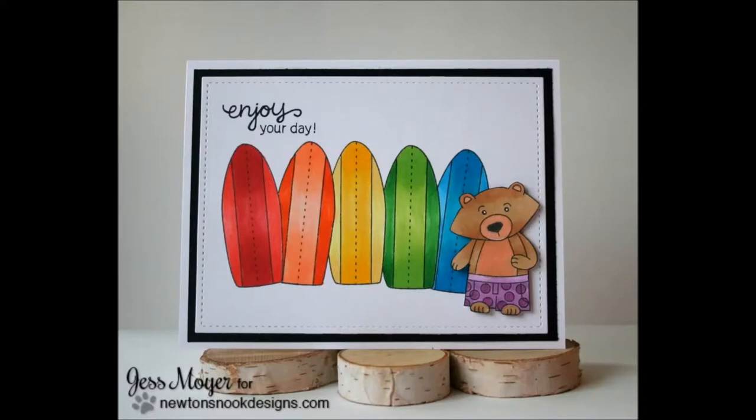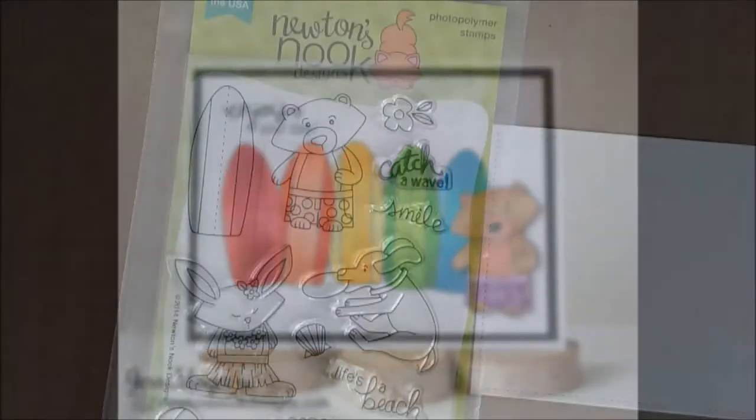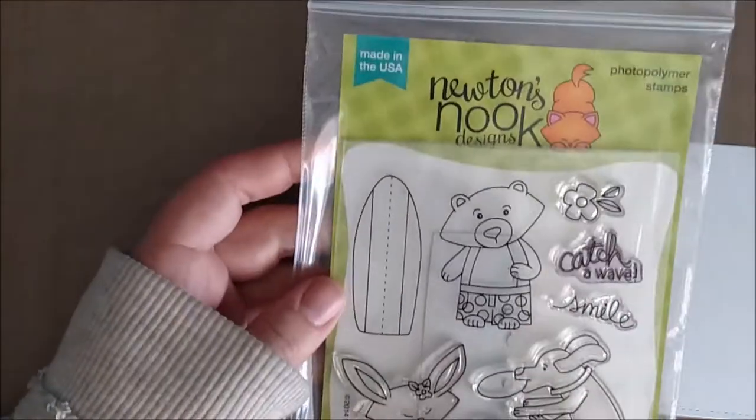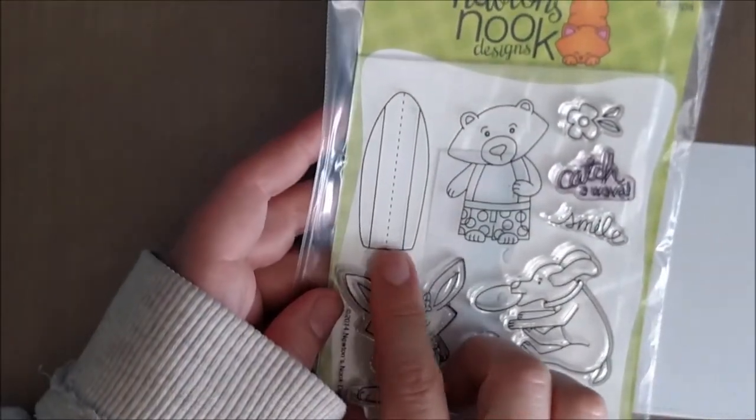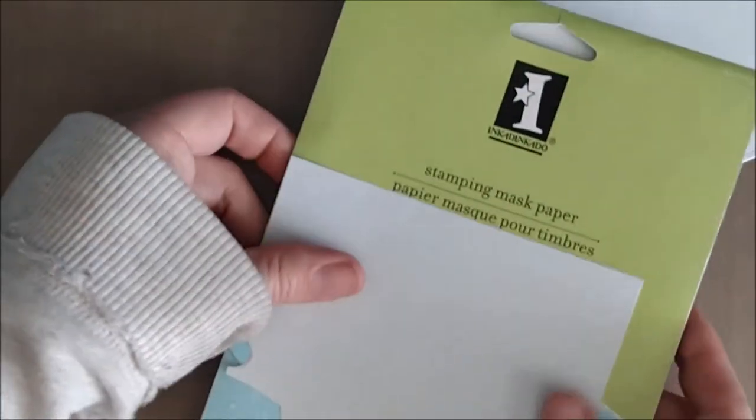Hello crafty friends, it's Jess from JessCrafts.com and today I have a rainbow themed card featuring Newton's Nook Design stamps. The stamps I'm using are from last summer's release called Beach Party. I'll be creating a set of rainbow surfboards and then incorporating the final color of the rainbow with that little surfer dude Winston there.